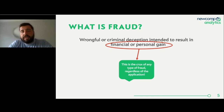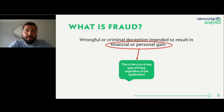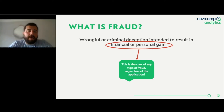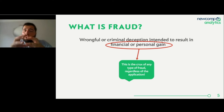What we want to do instead of tackling it through deterministic business rules is take every data point we have on every customer, feed it through a model, and look for outlying behavior — behavior that is not normal, behavior that changes what we define as normal. The underlying assumption is that not everybody is committing fraud; it's only the few. So we use the normal many to determine the outlying few.